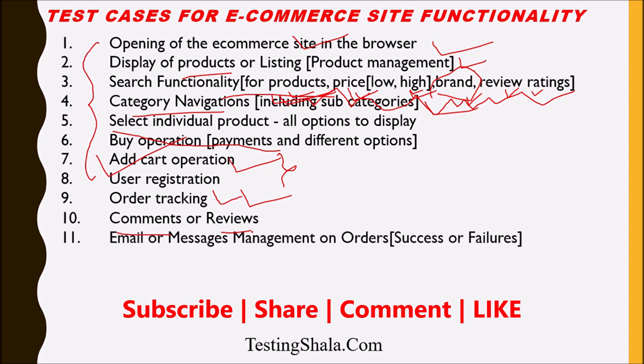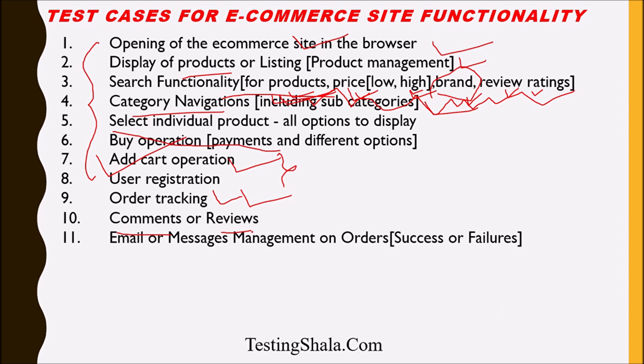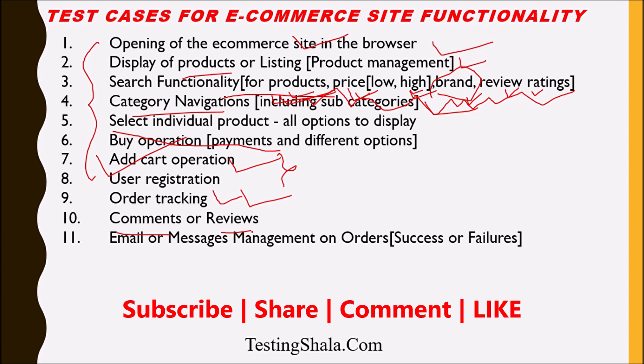The eleventh test case is email and message management. Once an order is placed, all communications with the customer are done through email or phone messages, keeping the customer informed about their order status. You should validate success cases and failure cases — for example, when the network goes away or the phone number is not reachable. Always refer to your product requirements when writing these test cases.